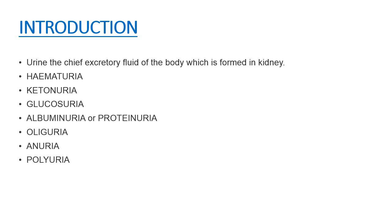The presence of bile salts like sodium taurocholate or glycocholate in urine may be due to obstructive jaundice. The presence of bile pigments like biliverdin and bilirubin in urine is seen in all types of jaundice, whether it is obstructive, hemolytic, or hepatic.